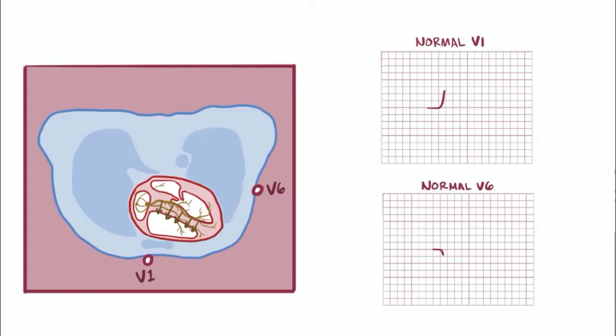Then that wave moves to the ventricles themselves, and since the left ventricle is usually more massive, you'll get a large depolarization directed away from V1 but toward V6, so negative on V1 and positive on V6.